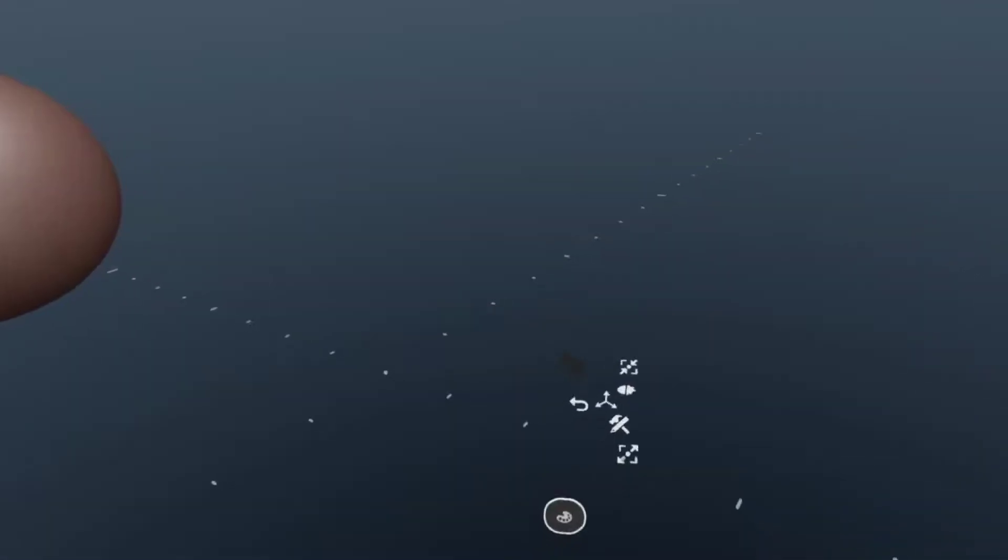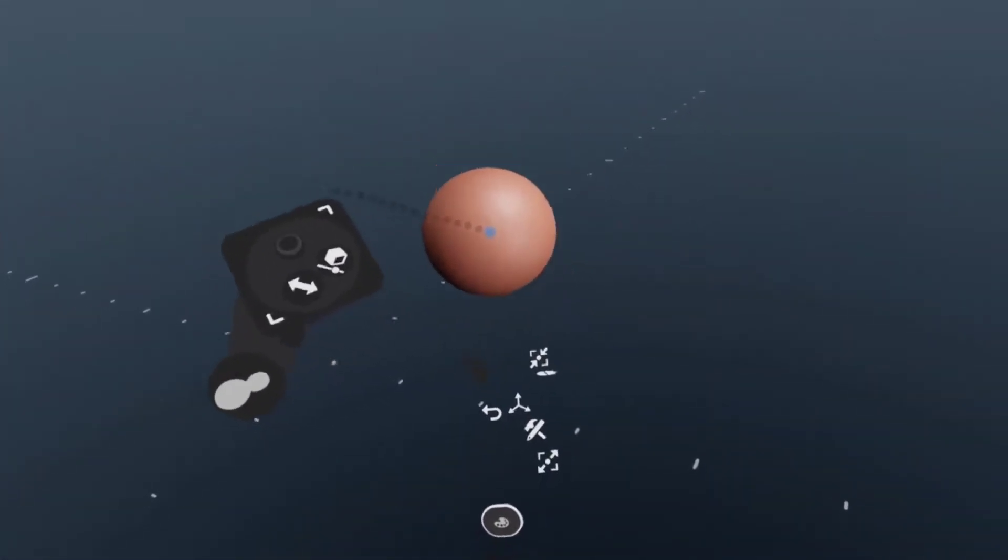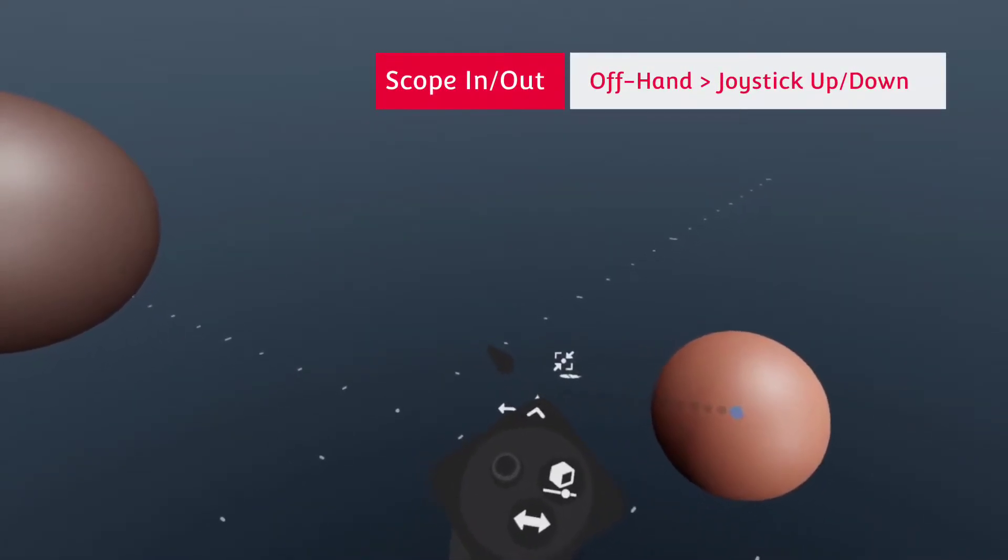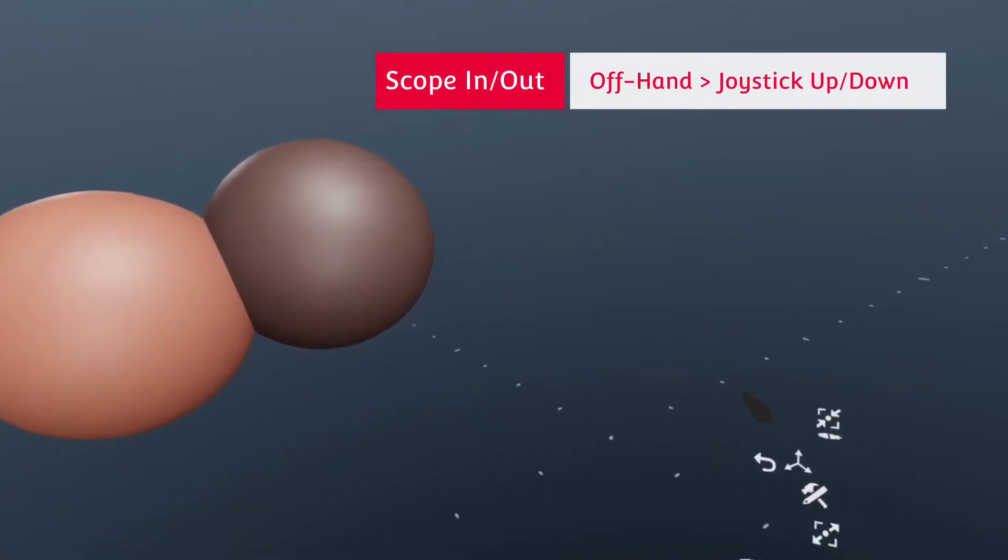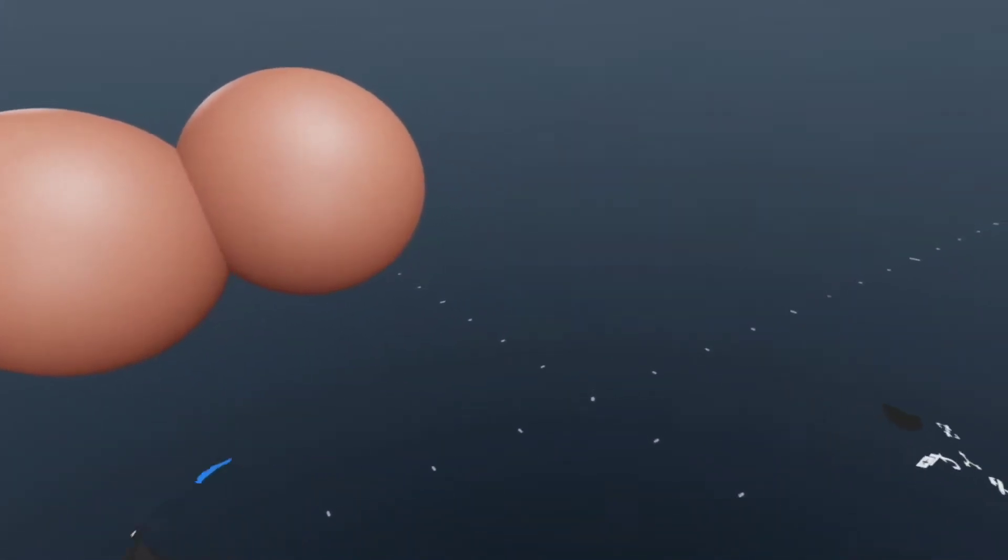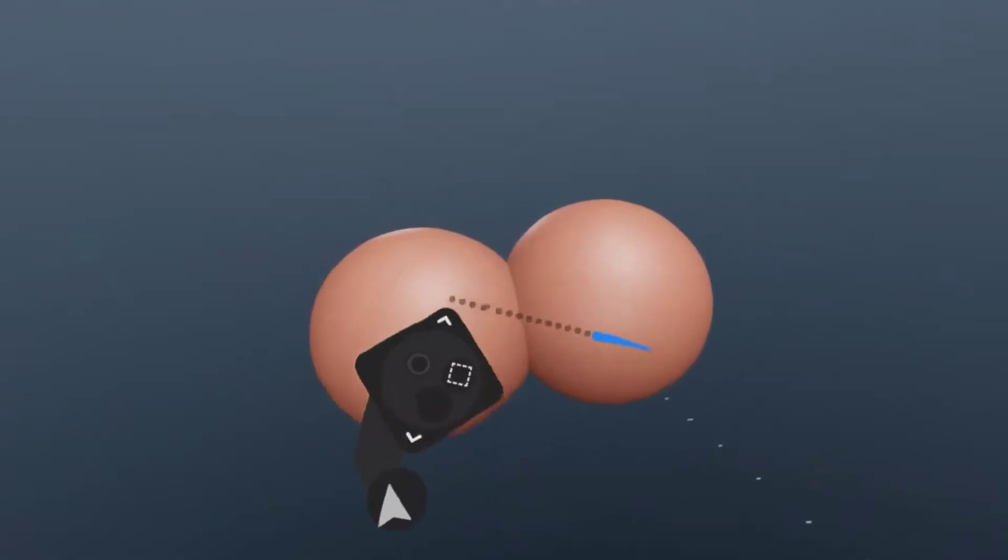So in this case, this is where the little buttons here on this controller come in. The one that's the arrows pointing together is to scope in. The one pointing out is to scope out. And scoping out will, in this case, take us back to the main scene. And now both of these layers are available to us.